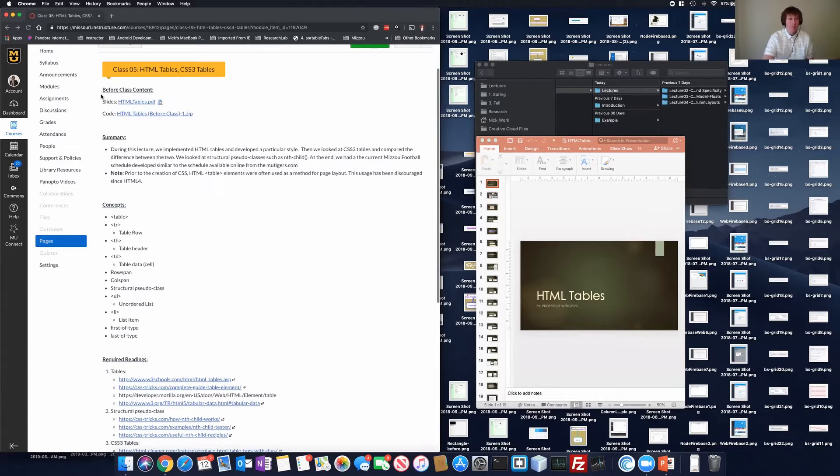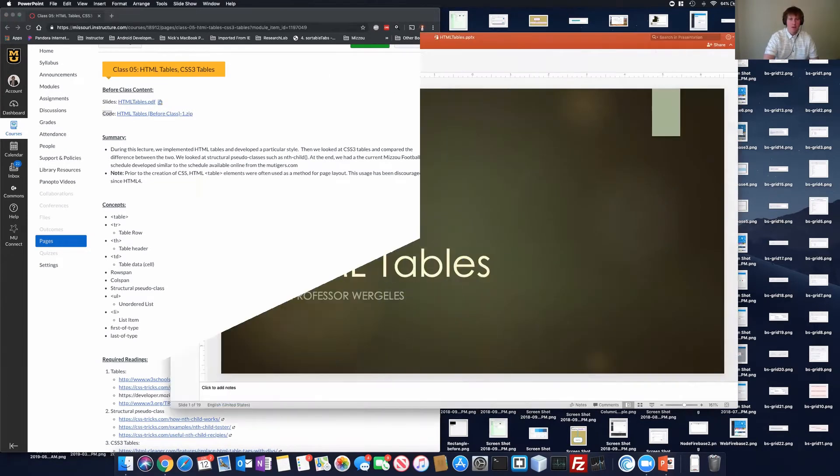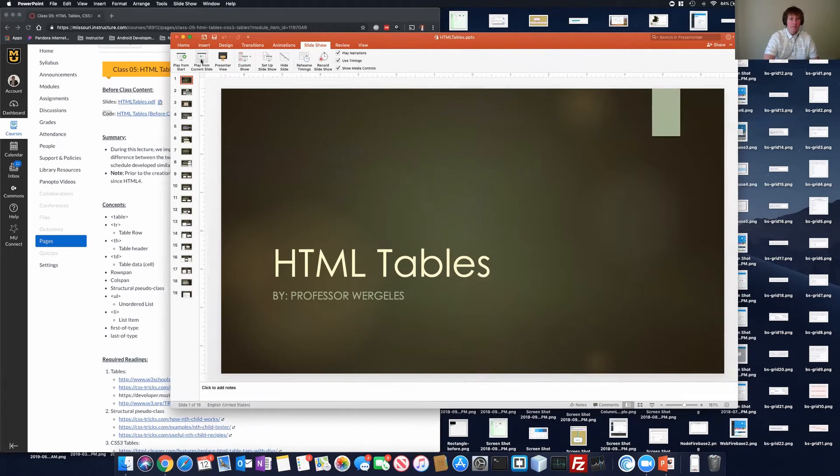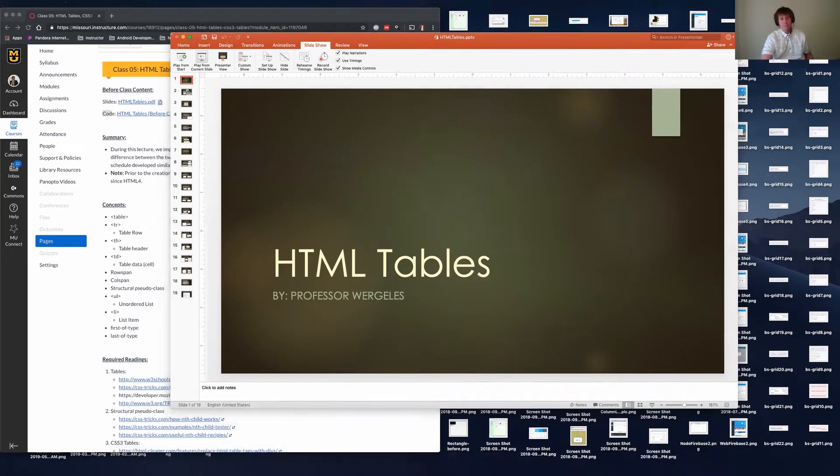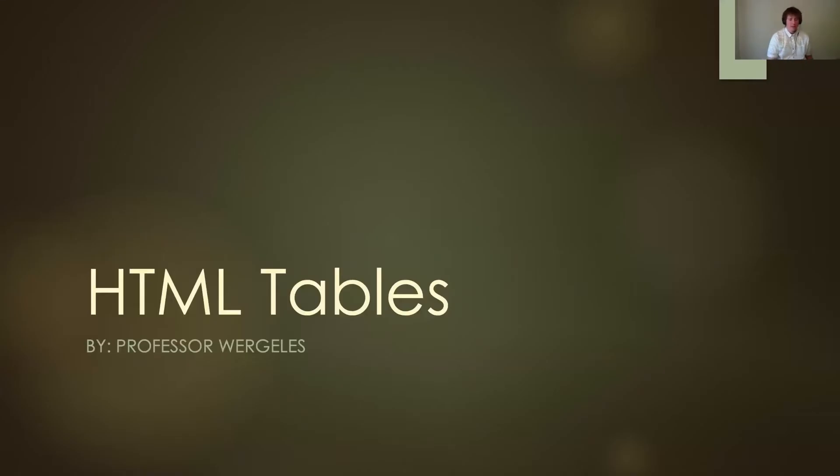If you look at the Canvas page, we're going to start with the slides and then we're going to look at some code examples. So if you open up the slides, HTML tables, we'll go ahead and begin there. You can take some notes as we're going through the concepts. Opening up the slides, we're going to start from the current slide and we'll be learning HTML tables.